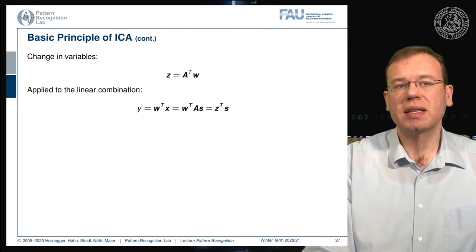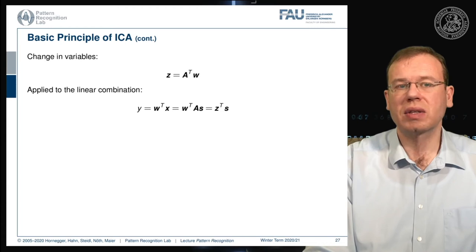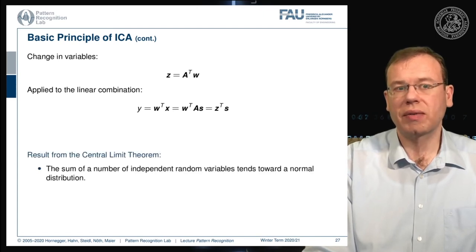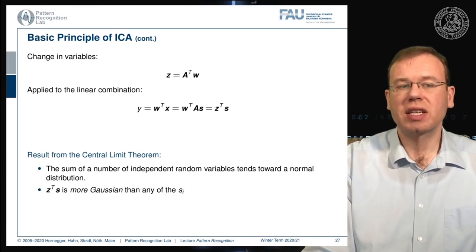We can perform a change of variables by setting z = A-transpose w, and applying this in the linear combination: y = w-transpose x = w-transpose A times s, which can be rewritten as z-transpose s. By the central limit theorem, the sum of independent random variables tends towards a normal distribution, so z-transpose s is more Gaussian than any of the individual components si.